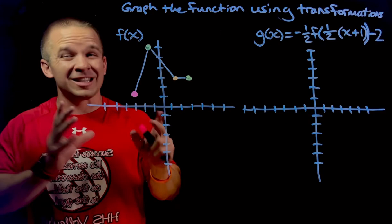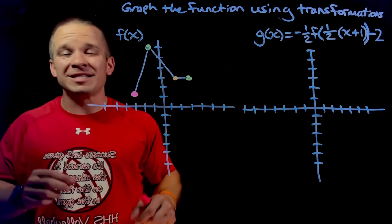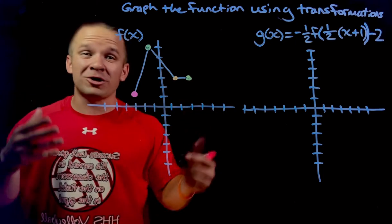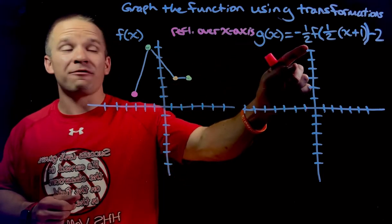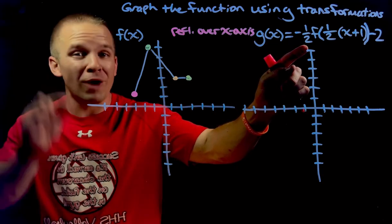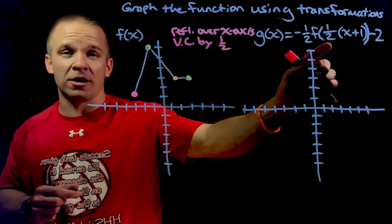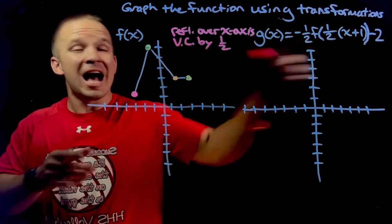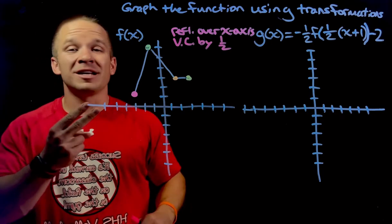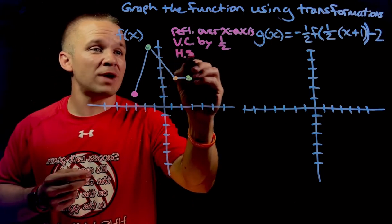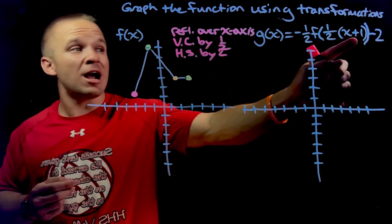All right, we're going to use those, but first, let's list out our transformations. We have a negative up front. That means that it is a vertical reflection or reflection over my x-axis. Then I have this one half. It's outside the function, so it's a vertical compression by one half. Now we move on the inside of my function. If it's on the inside, it's horizontal. I got to flip it. My factor is then two because that's the reciprocal of one half, so that's going to be a horizontal stretch by two. Then I have this inside here, x plus one.